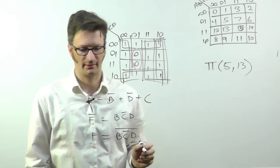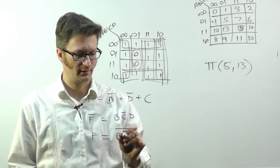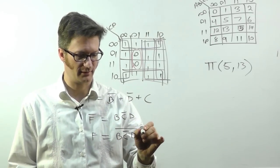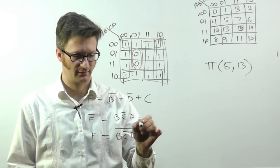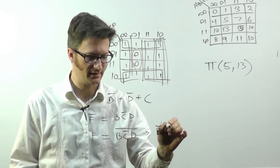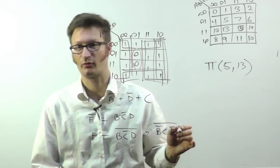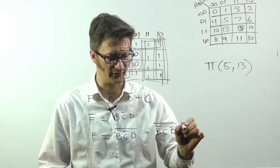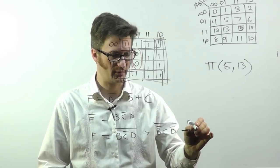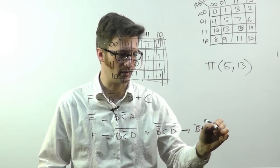And simplify using De Morgan's theorem. So first step, we're going to have B bar C D bar, where we've inverted the individual terms. Next, we swap AND for OR and vice versa. So that becomes B bar OR C OR D bar.